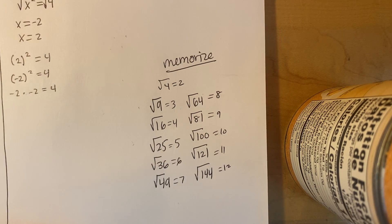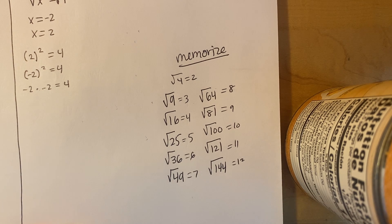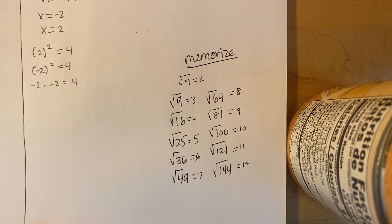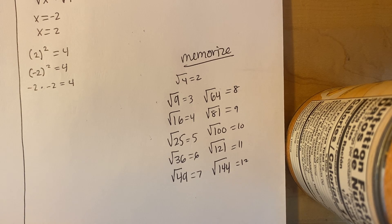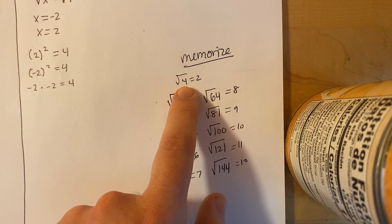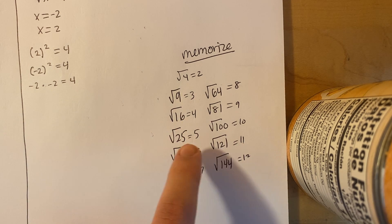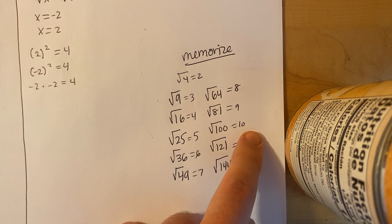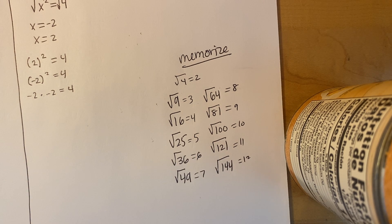This is a really important time in your life to memorize these square roots. I cannot stress this enough — if you need to make note cards, flash cards, repeat them 5 million times, it's going to help you in math class forever because these numbers are going to come up again and again all the way up to your senior year. Square root of 4 is 2, square root of 9 is 3, square root of 16 is 4, 25 is 5, 36 is 6, 49 is 7, 64 is 8, 81 is 9, 100 is 10, 121 is 11, and 144 is 12. Make sure to memorize these.